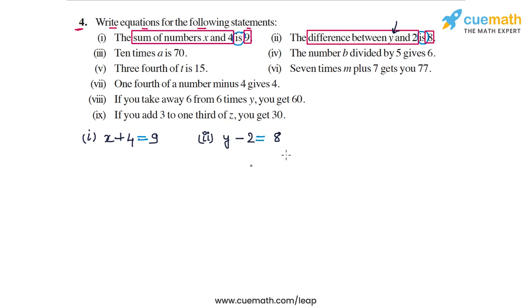In part 3, the statement says 10 times a is 70. The word 'is' is equal to in the equation. On the LHS you will have 10 times a, and on the RHS you will have 70. So the equation becomes 10a is equal to 70.